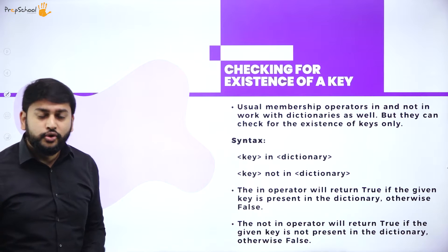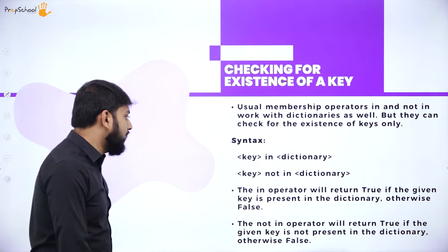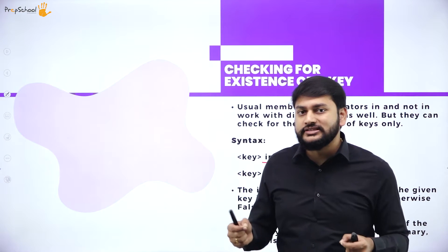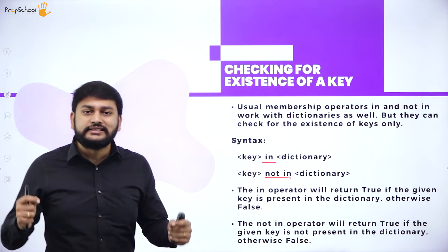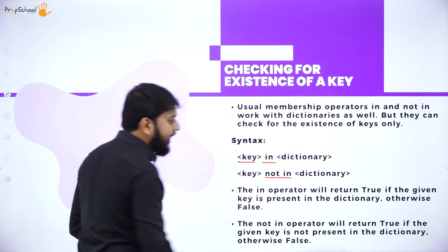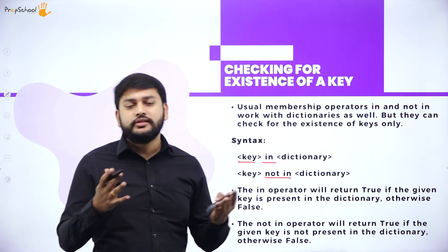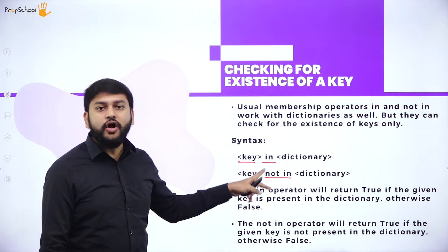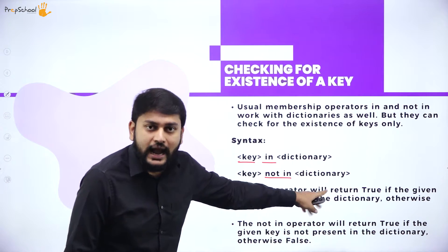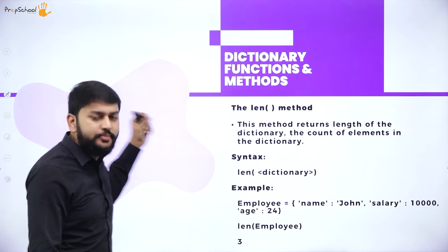For checking the existence of a key in the dictionary, we have two operators: 'in' and 'not in'. For example: 'age in dictionary' — if the key is present, it returns True; if not, it returns False. For 'not in': 'age not in emp1' — if the key is not there it returns True; if it is there it returns False.